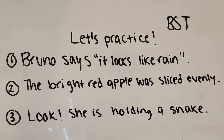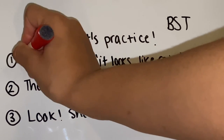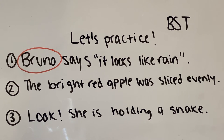Sentence number one says, Bruno says it looks like rain. The subject in this sentence is Bruno. Some ways we can tell that is because Bruno is capitalized and it is a proper noun. Also, we have the verb says. Because an action is being performed, we need to look at who is performing that action. Who says it looks like rain? Bruno says that.